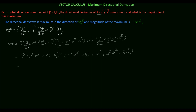So del f equals 2x y squared z cube i vector plus 2x squared y z cube j vector plus 3x squared y squared z squared k vector.